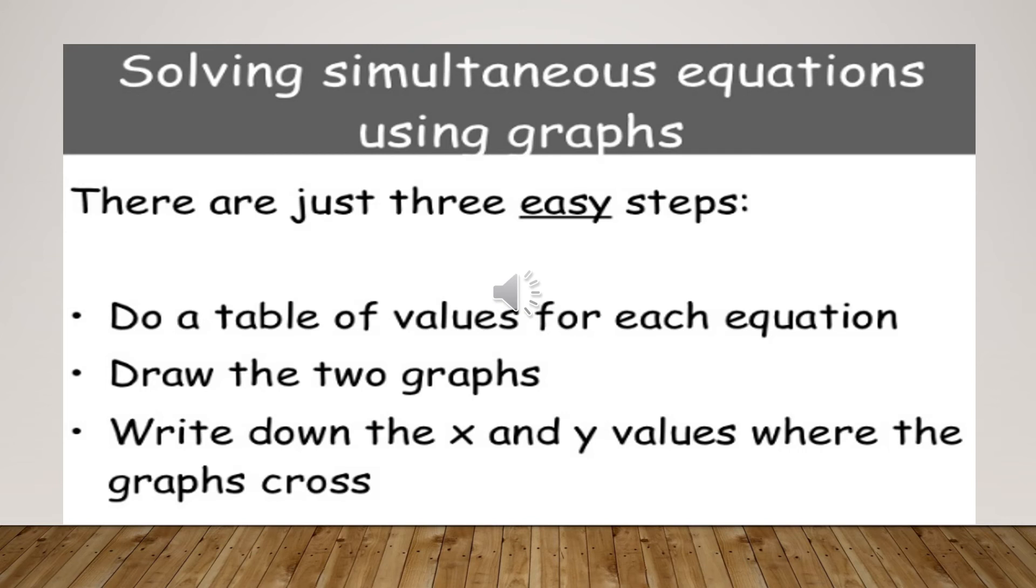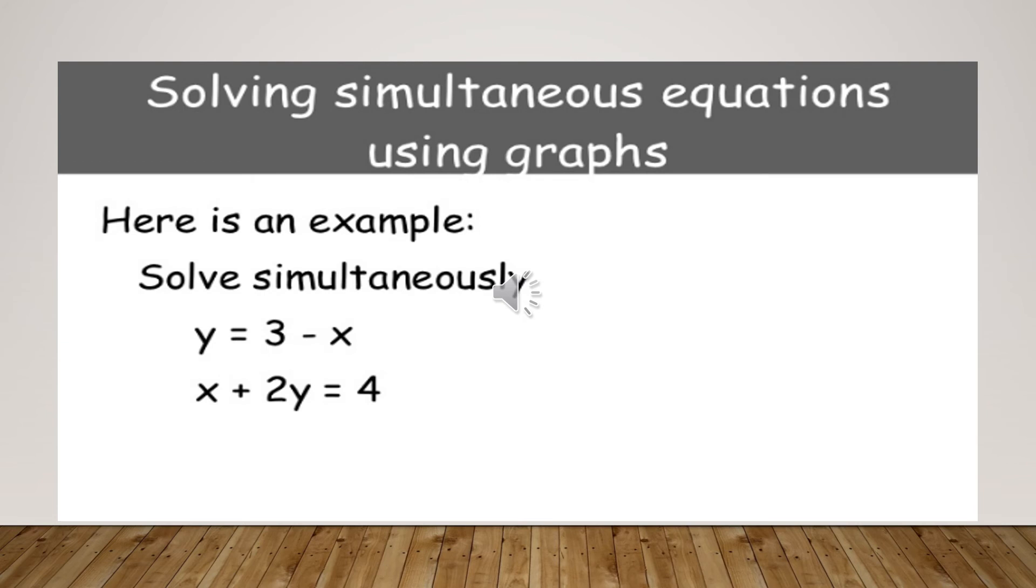There are just three very easy steps. First of all, you have to make a table of the values of each of the equation. Then you have to draw the two graphs. And you have to then write down the values of x and y where the graph cross. We can understand it more clearly by the graph that is given. In the next slide, there is an example.